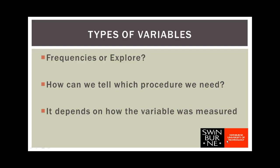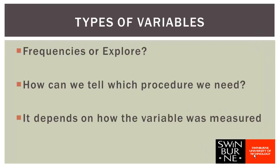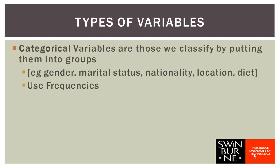So how do we actually decide whether we should be using the frequencies procedure or the explore procedure? It depends on how the variable we're dealing with was measured. Variables like sex and marital status, for which we produced frequency tables and bar charts, had just a couple of categories - two categories of sex and five categories of marital status. These are what we describe as categorical variables. For categorical variables, it makes sense to produce frequency tables, bar charts, maybe pie charts - that is, we should be using the frequencies procedure.